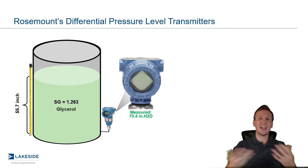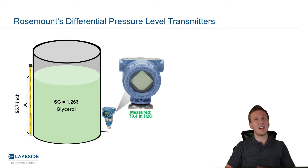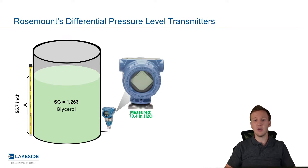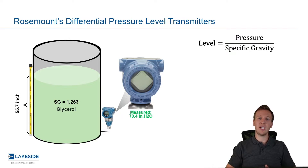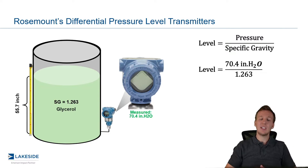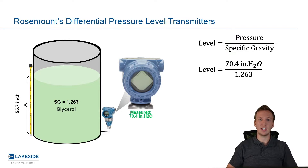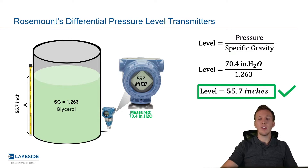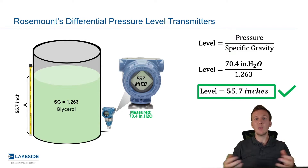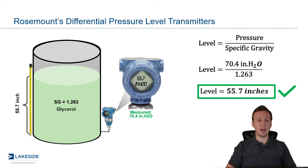So we need to take that into account. We need to tell the transmitter that it doesn't have water — it has glycerol. How do we do that? We simply take that pressure reading and divide by the specific gravity. In this case, we take that 70.4 inches of water, divide it by 1.263, and we are left with 55.7 inches of glycerol. And this is exactly what we want — a great level measurement from this gauge pressure transmitter.